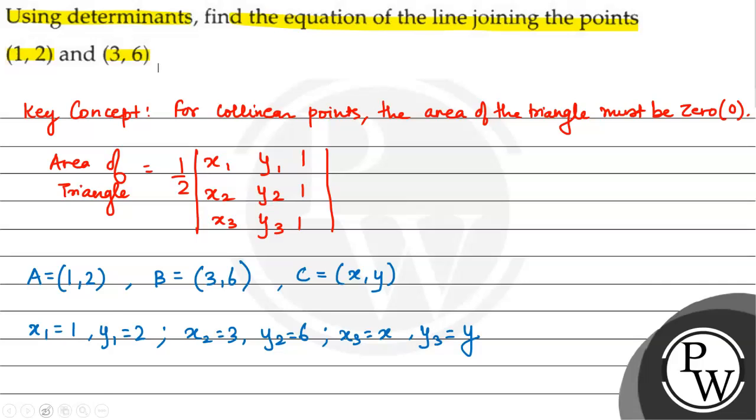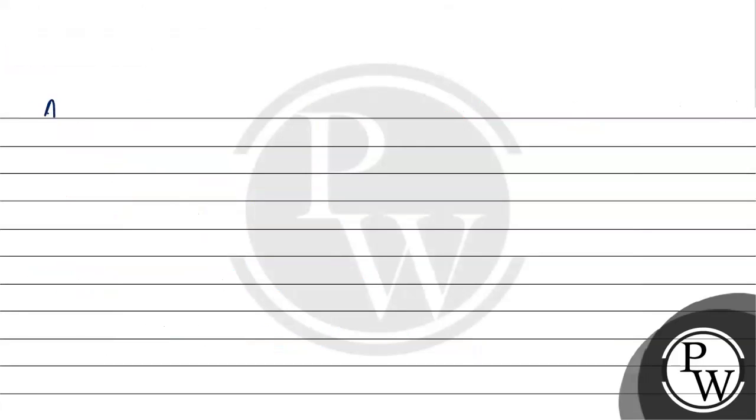Now, if I put area of triangle in the formula, it will be half multiplied by the determinant: 1, 2, 1; 3, 6, 1; x, y, 1. This should be equal to 0, because these are collinear points joining the line.